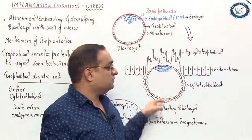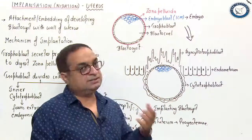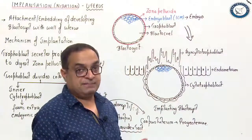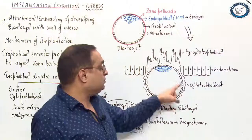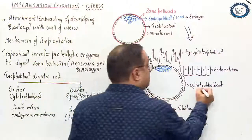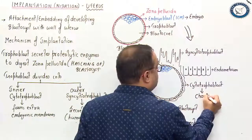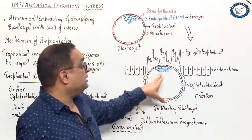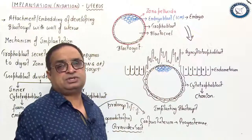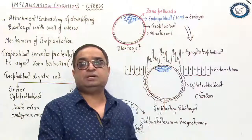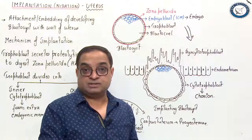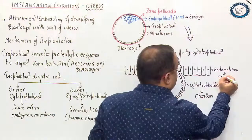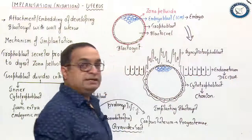Coming back to the trophoblast layers: the cytotrophoblast and syncytiotrophoblast. Syncytiotrophoblast penetrates deep into the endometrium, lays the foundation for the placenta, and secretes HCG. Cytotrophoblast plays a role in the formation of the chorion — the outermost extra-embryonic layer covering the embryo. The inner cell mass cells form the embryo proper. During implantation, the blastocyst completely sinks into the endometrium, which is called interstitial implantation. The endometrium of the pregnant uterus is called decidua.